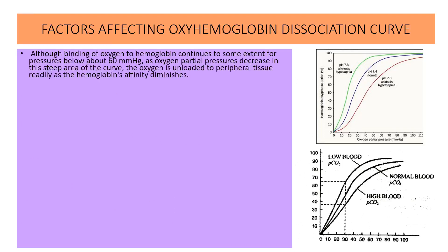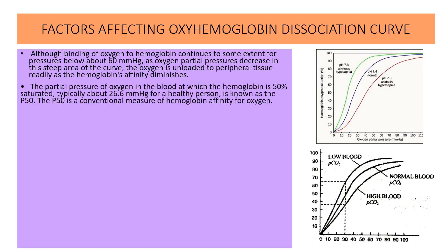Although binding of oxygen to hemoglobin continues to some extent for pressures below about 60 mmHg, as oxygen partial pressure decreases in the very steep area of the curve, oxygen is unloaded to peripheral tissue readily. The partial pressure of oxygen in the blood at which hemoglobin is 50% saturated — typically about 26.6 mmHg for a healthy person — is known as P50.